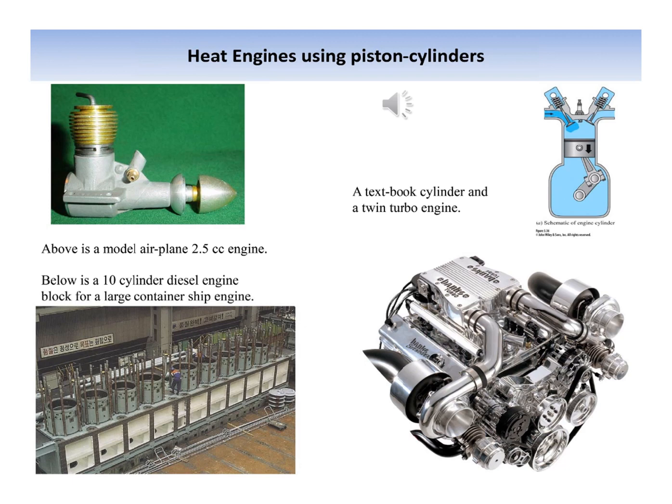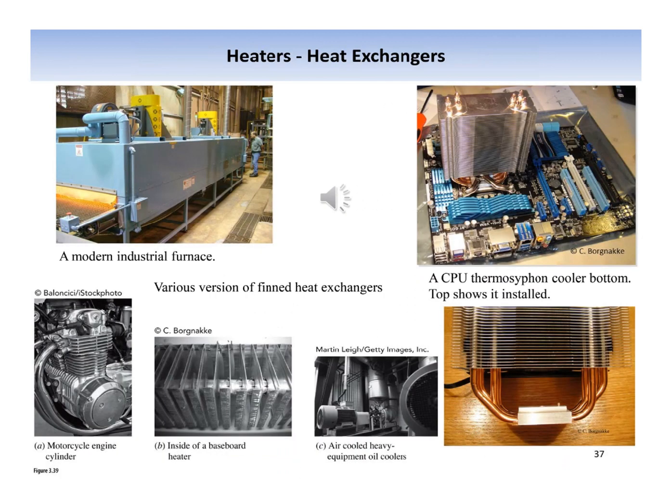Heat transfer occurs between domains at different temperatures, as in a building with different inside and outside temperatures. The double set of window panes is used to reduce the rate of heat transfer through the window. In situations where an increased rate of heat transfer is desirable, fins are often used to increase the surface area for heat transfer to occur. The last example of a finned heat exchanger is a heat pipe or thermosiphon.